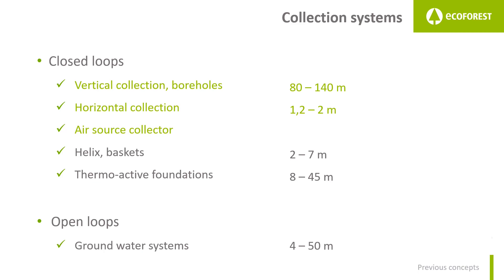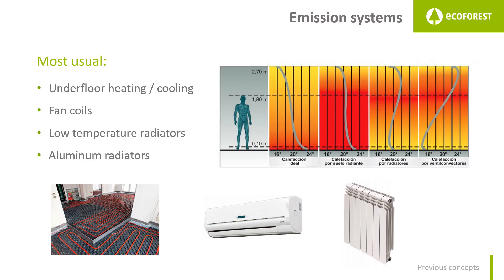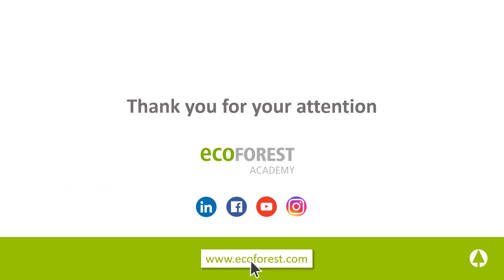Air source installations are not so diverse. To conclude, the most usual emission systems will be listed: underfloor heating, fan coils, low-temperature radiators, and aluminium radiators, ordered here in decreasing efficiency. This is due to the fact that underfloor heating has a higher exchange surface, which means it can run at lower production temperatures, which translates to the highest efficiency. And so ends this basic concepts presentation of the Ecoforest Academy. Thank you for your attention.